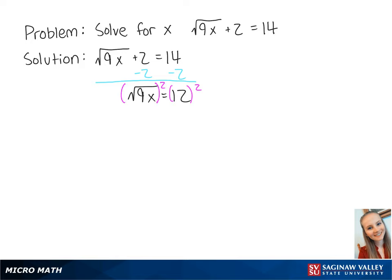To get rid of the radical sign, we want to square both sides of the equation. This gives us 9x equals 144.